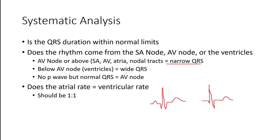If the QRS is wide — super wide — that is an example of a beat that started somewhere in the ventricles. Remembering: if the QRS complex is narrow, it started somewhere above the ventricles. If it's wide and often weird-looking, it started in the ventricles. That could be an ectopic pacemaker — those gremlins that can sometimes find their way into the conduction system. Something is causing the ventricles to spontaneously discharge, not originating from a higher structure in the atria or SA node.